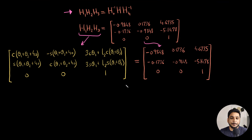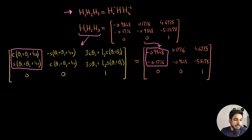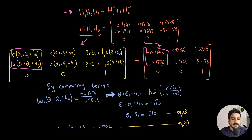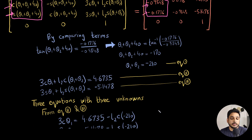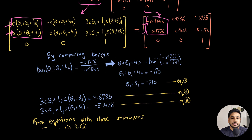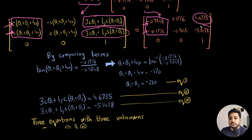Starting by comparing the sine and cosine terms, I divide the sine term by the cosine term, and similarly divide the corresponding terms on the right side. This gives: tan(theta1 + theta2 + 40°) = [right-hand side value]. Taking the arctangent, I end up with Equation 1: theta1 + theta2 = -210°. Similarly, comparing other terms gives Equation 2 and Equation 3. So now I have three equations with three unknowns: theta1, theta2, and L2.